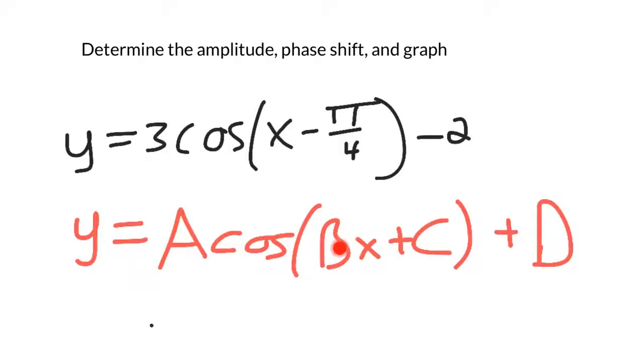The B represents any change to the period of the function, which means how fast it goes before it starts repeating itself. So B in our function is just 1, so our period hasn't changed. The period of cosine is 2 pi when it's unchanged. So that means we're going to go 2 pi units, and then the graph's going to start repeating.